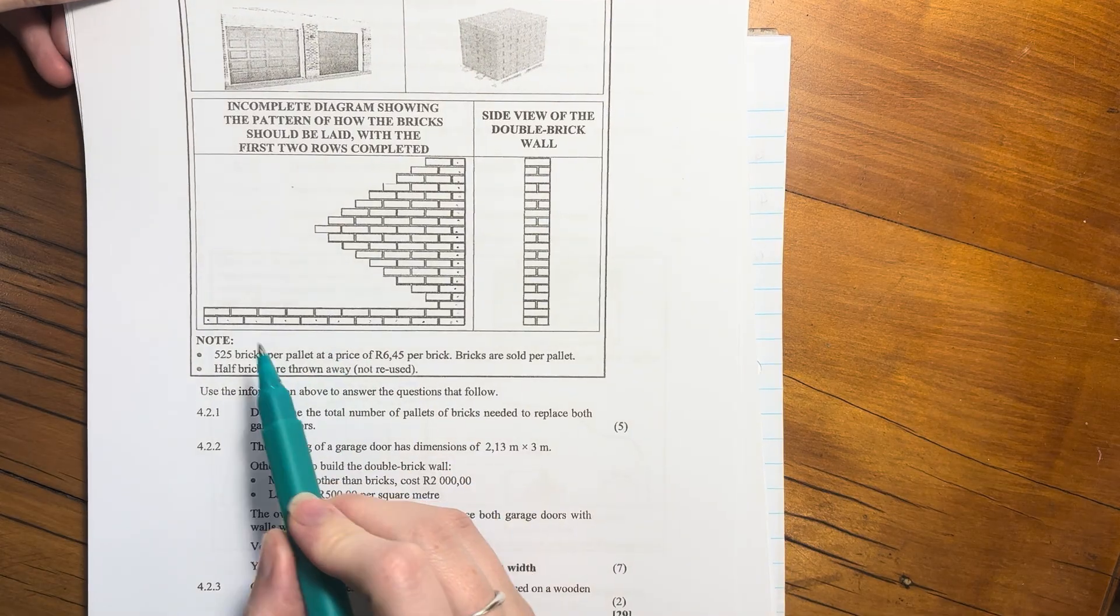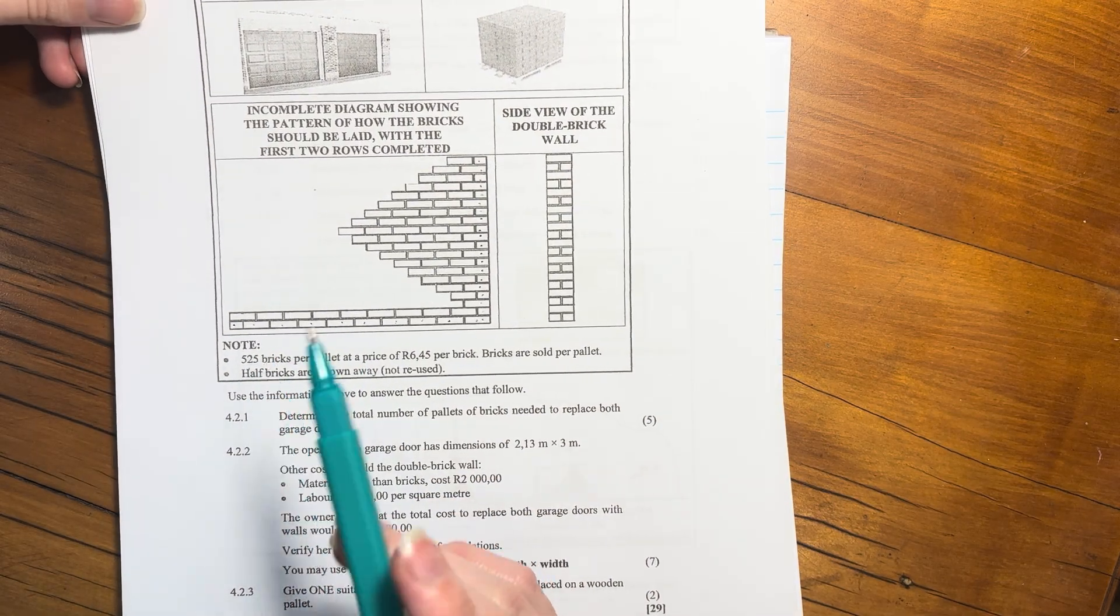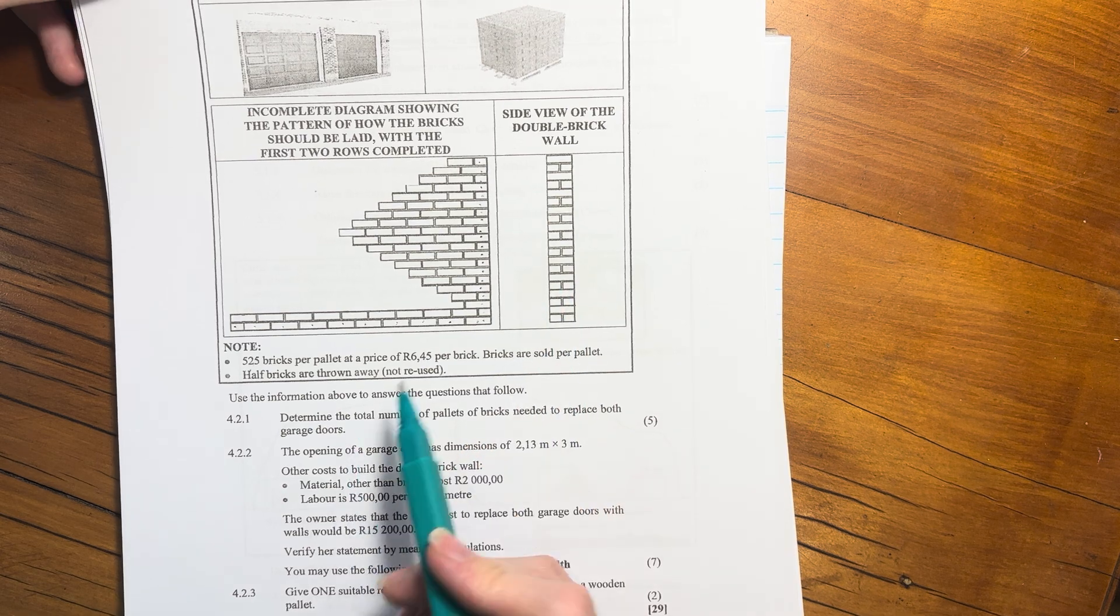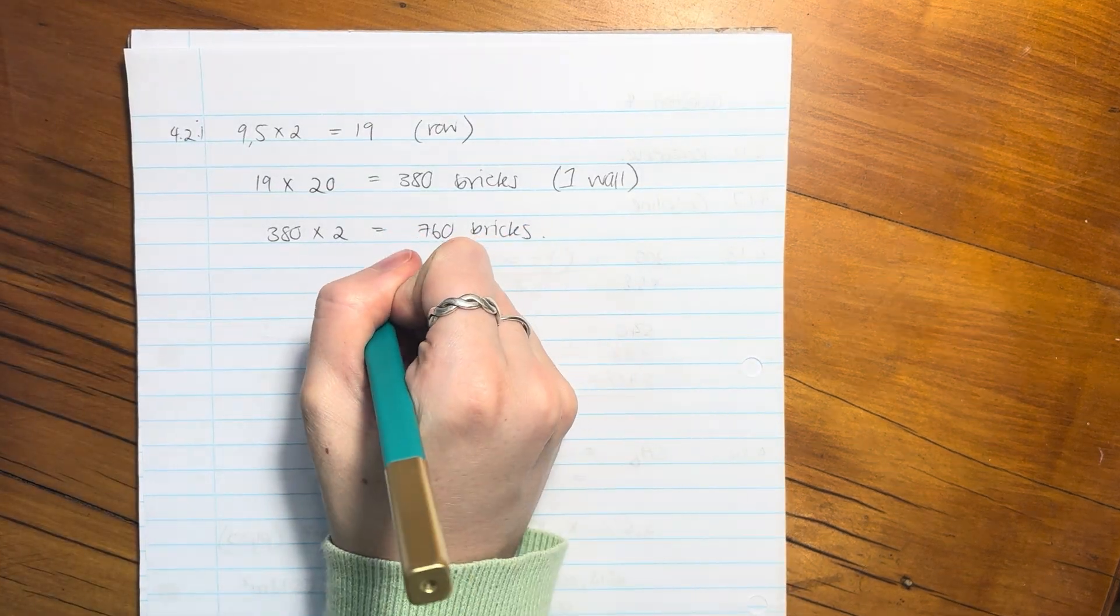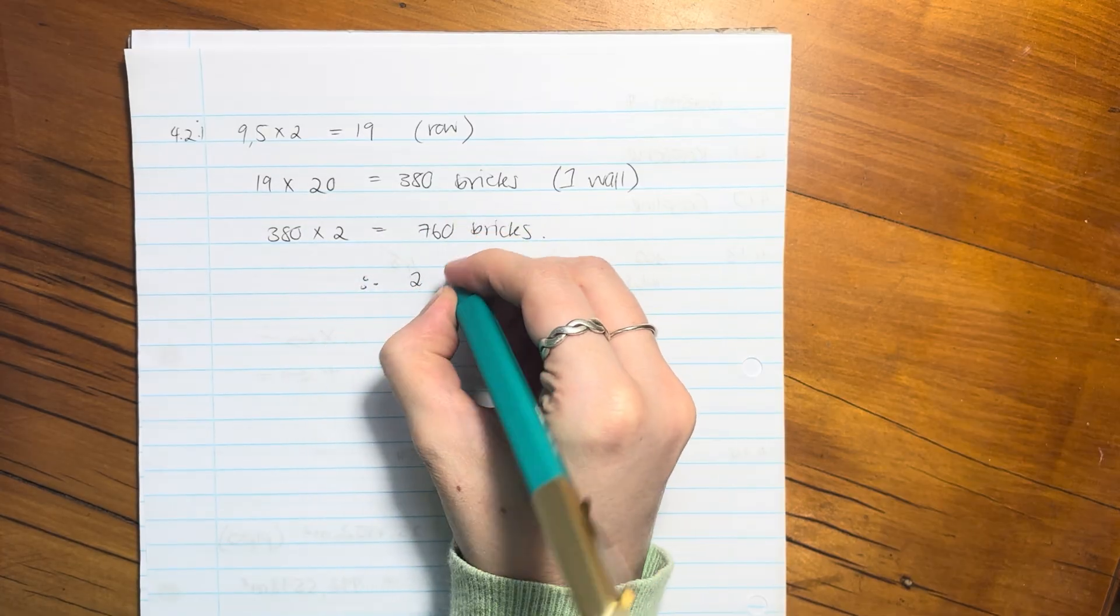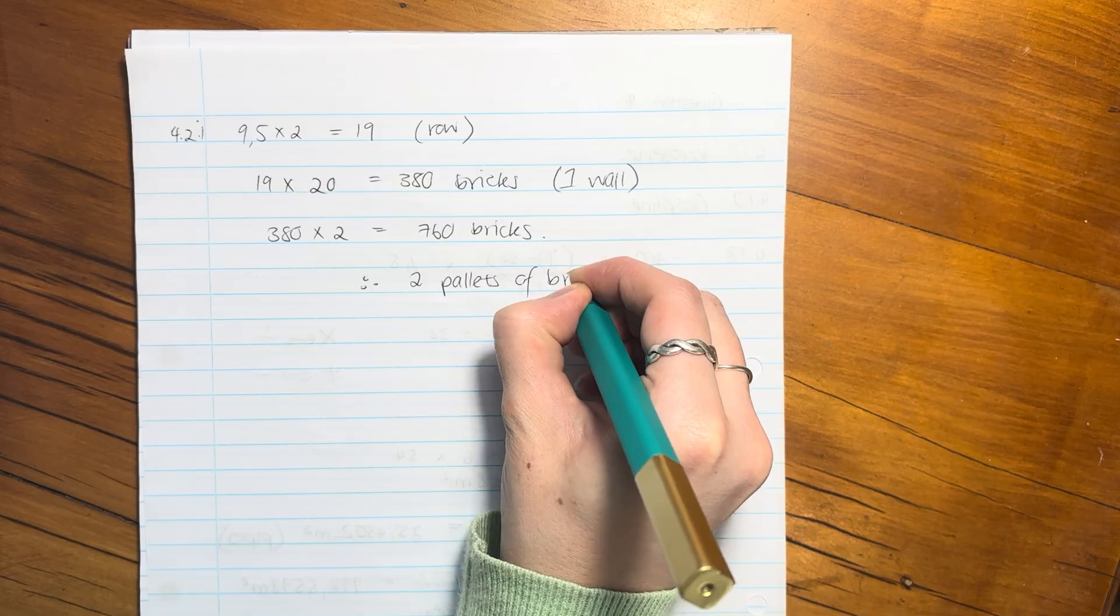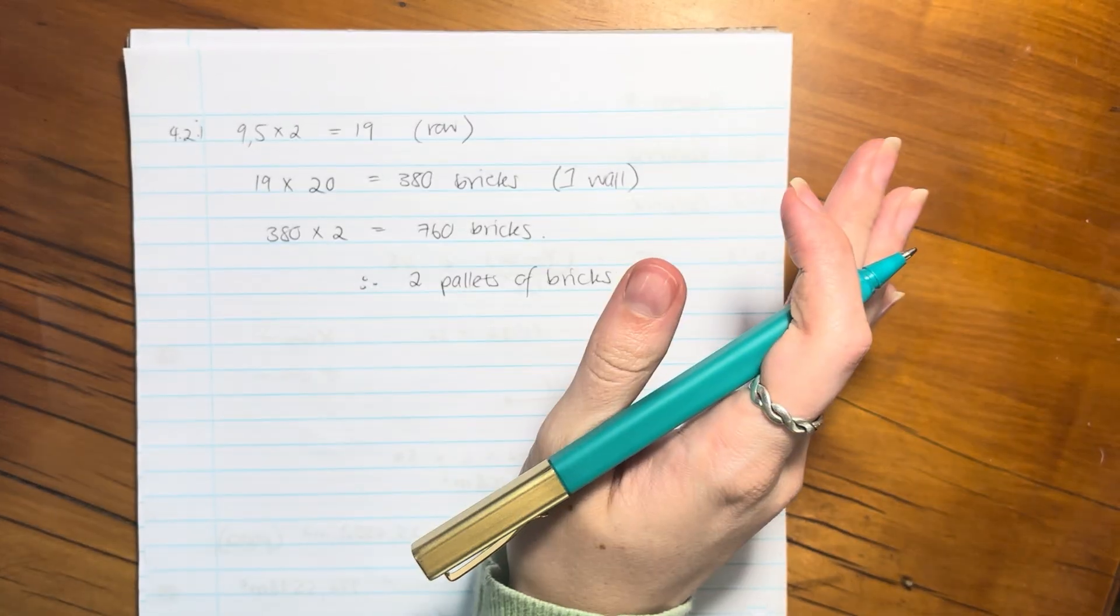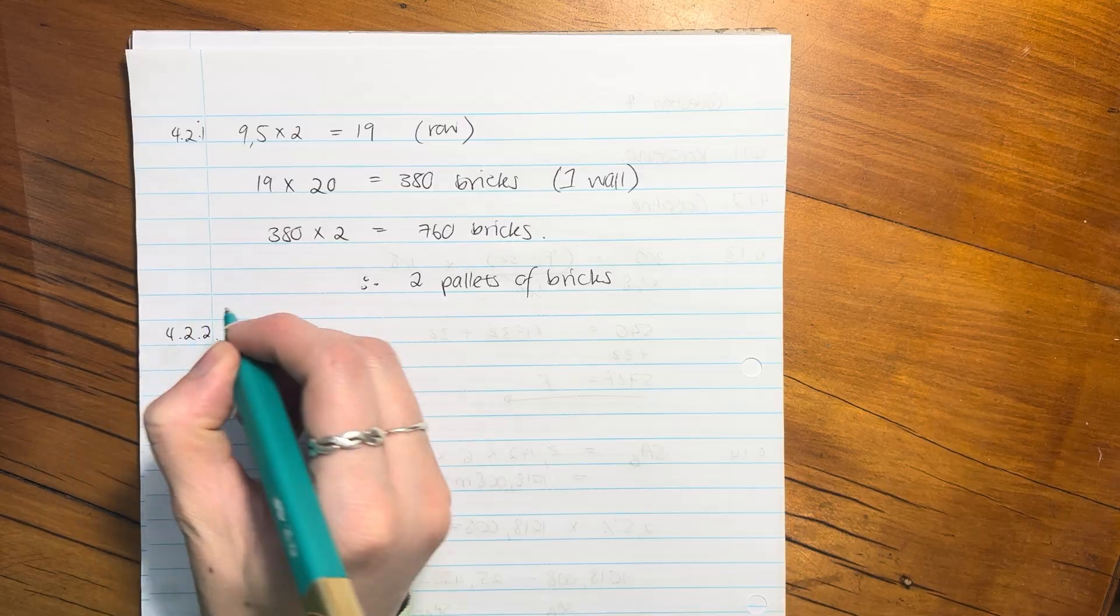Now remember, she can only buy it in pallets. 525 is not going to be enough, so she's going to have to buy two pallets of bricks. Therefore, two pallets of bricks. You have to work quite methodically but not a difficult question, easy to get five out of five.